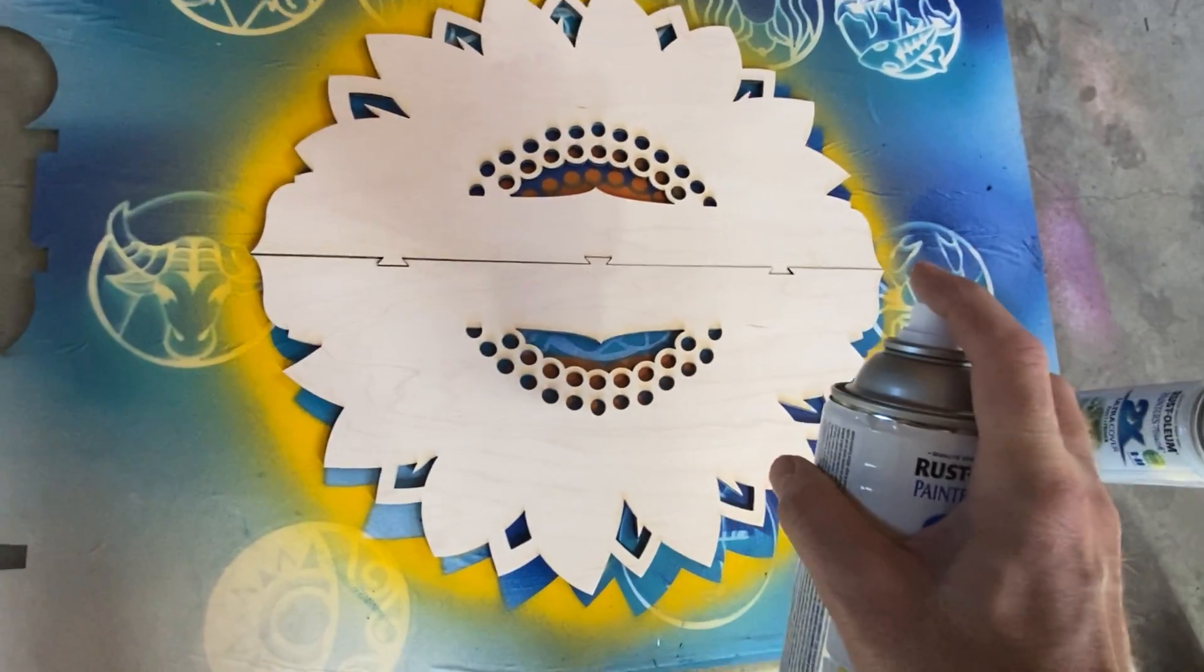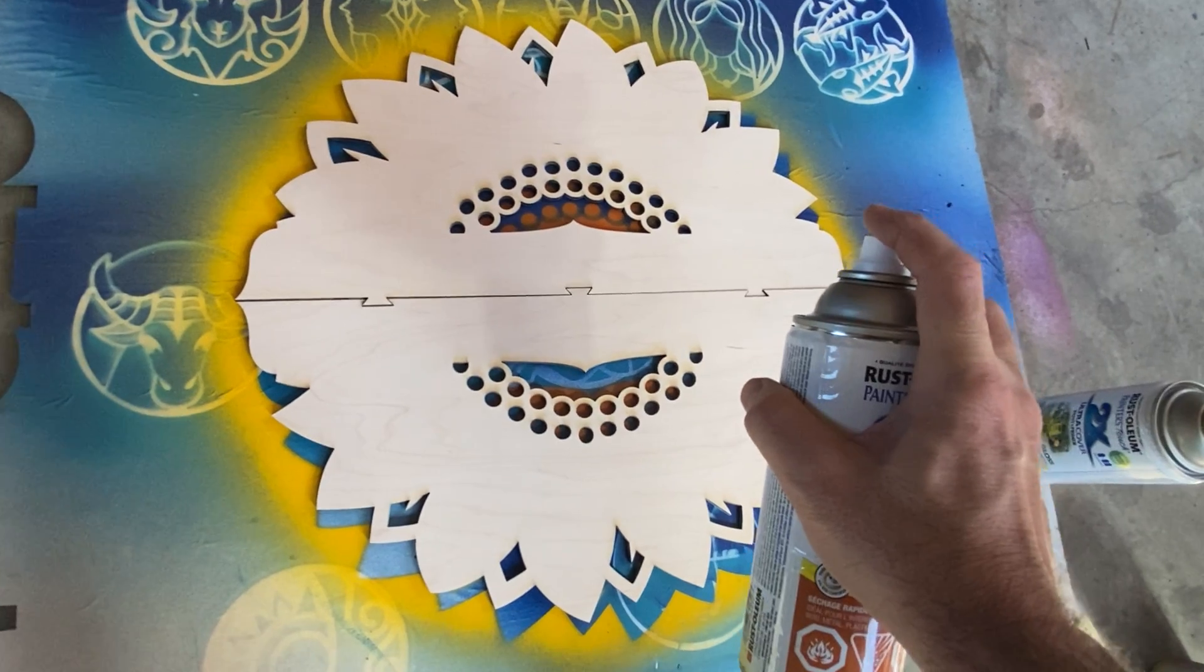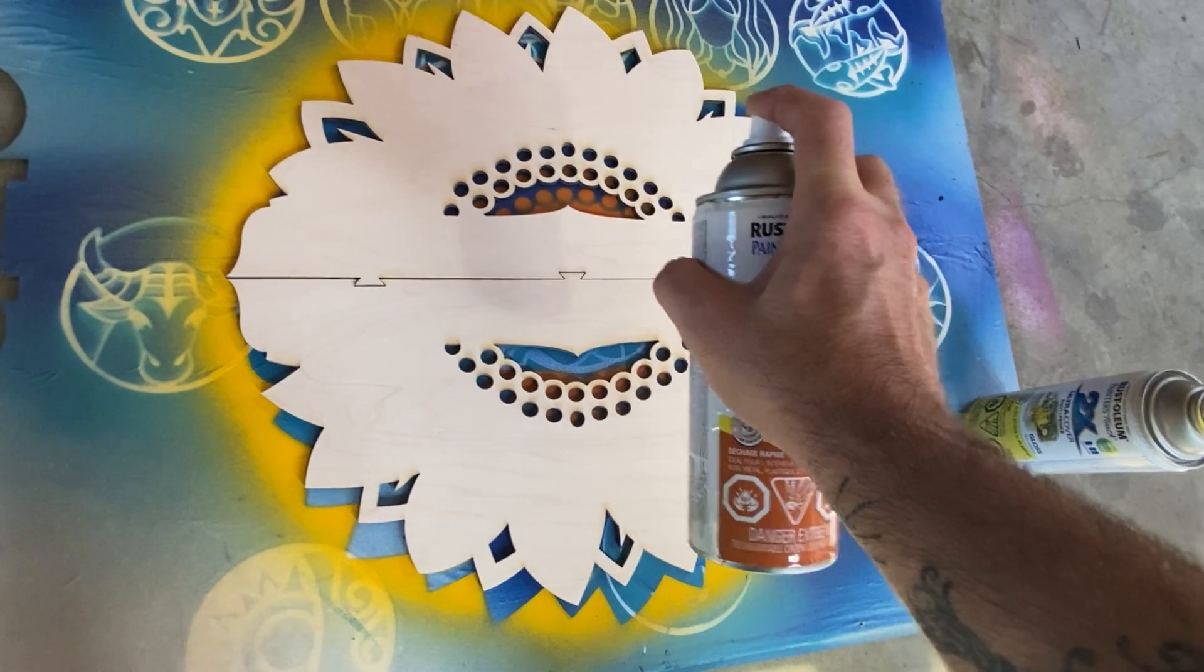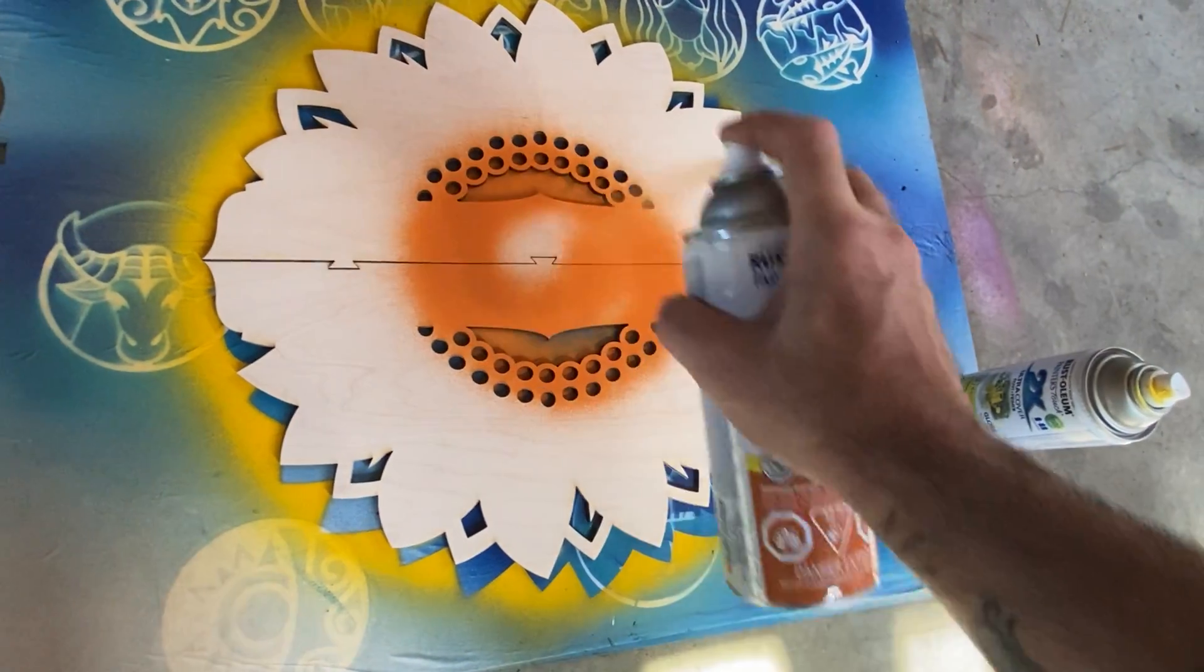So I'm just going to go in a circular motion. I'm about eight to ten inches off the board. So here we go, I'm going to create the center.